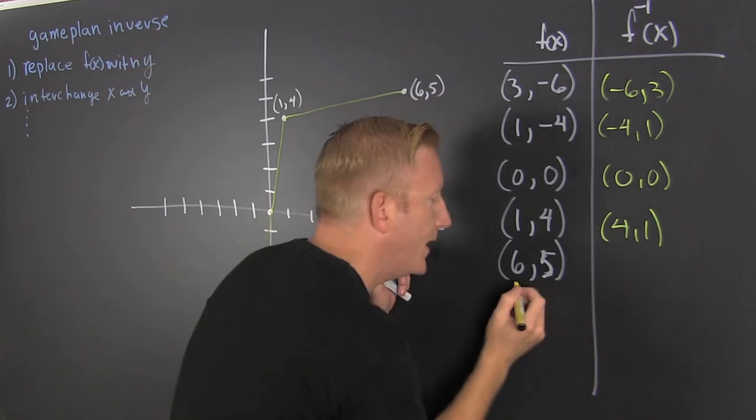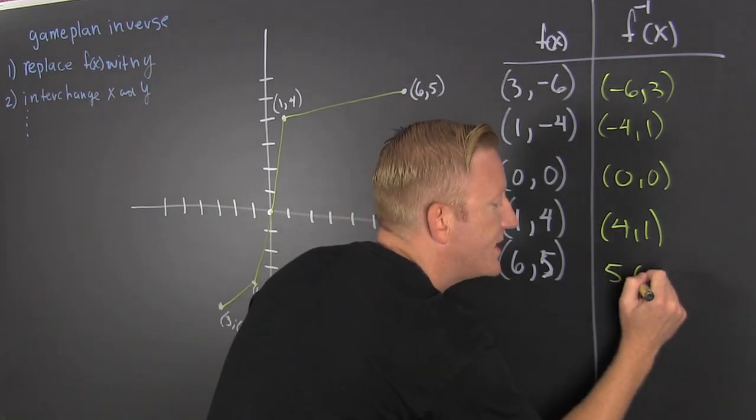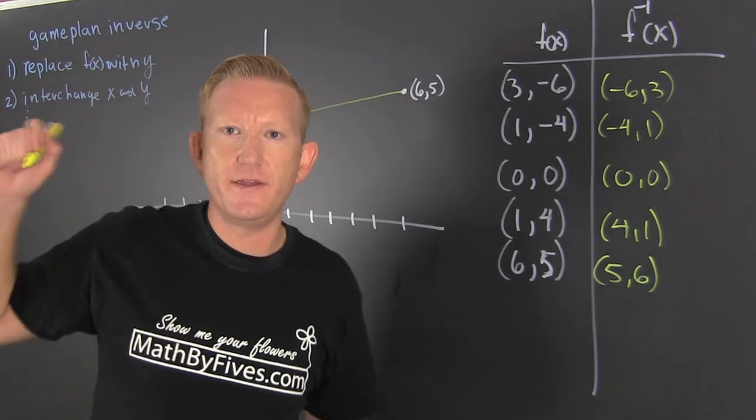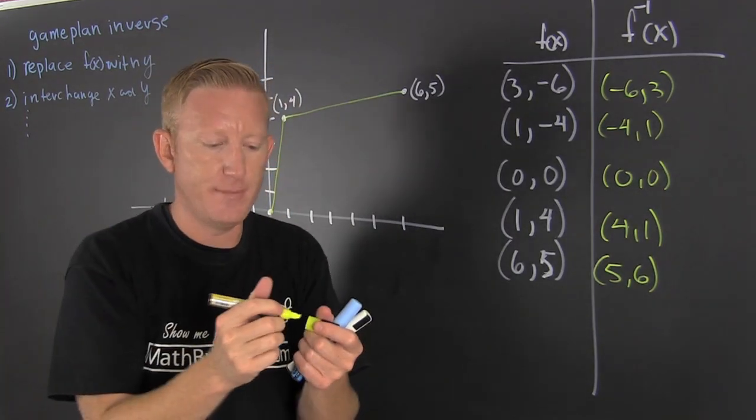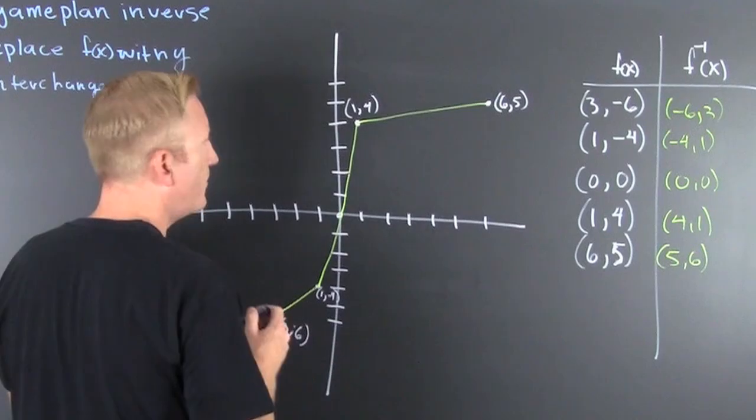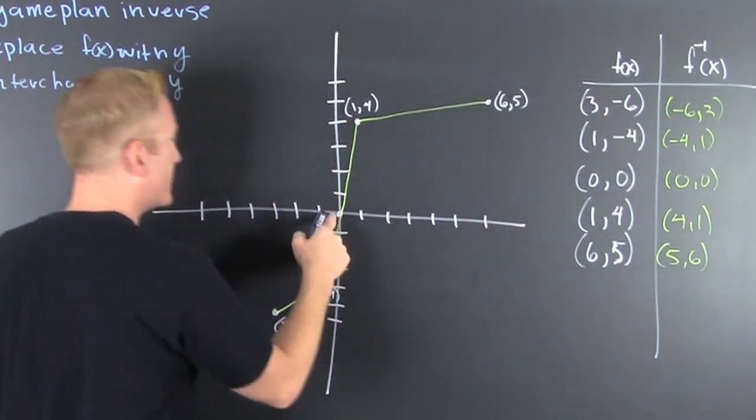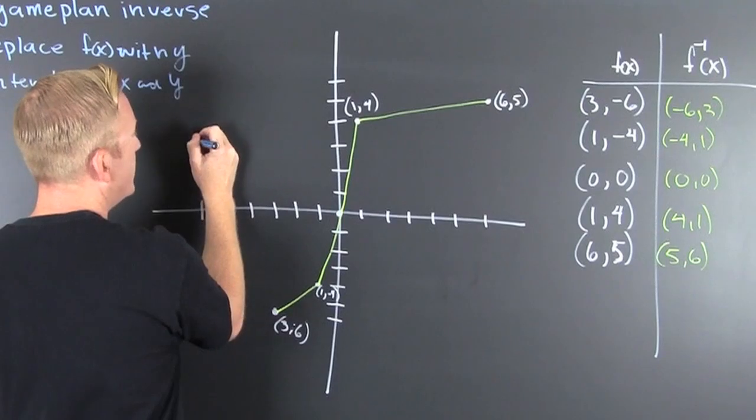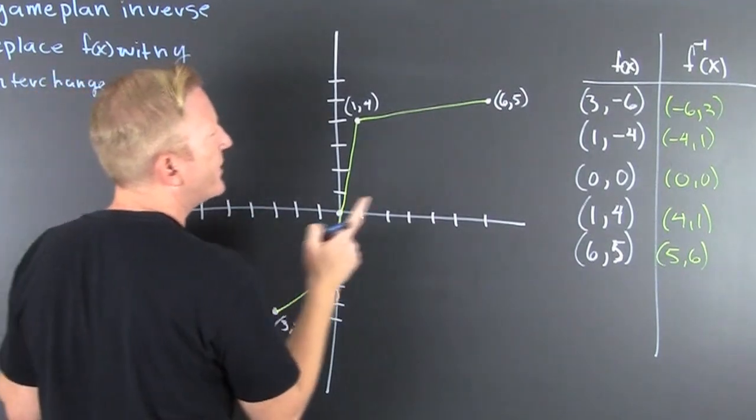Let's plot those points on that graph and see what happens. I'm going to put them in blue. (-6, 3) - that's (-6, 3). And then (-4, 1). Are we sure? Yeah.